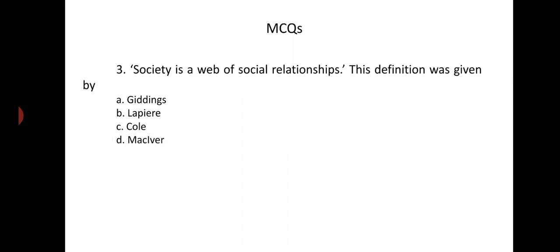Multiple choice question 3: Society is a web of relationships — this definition was given by A) Giddings, B) LaPiere, C) Cole, D) MacIver. The right answer is D, MacIver.